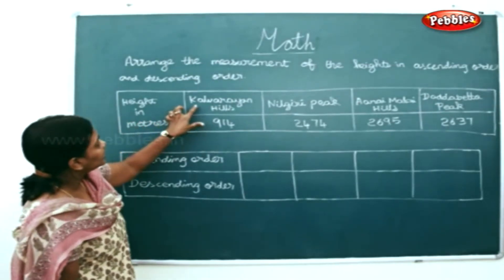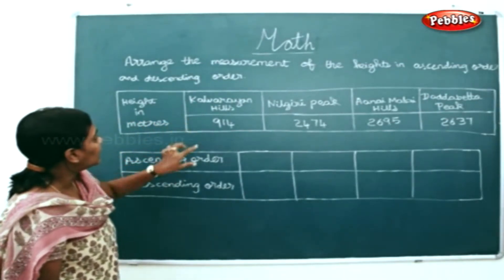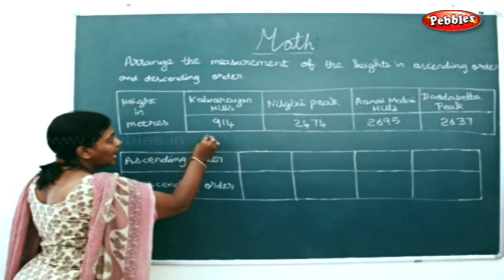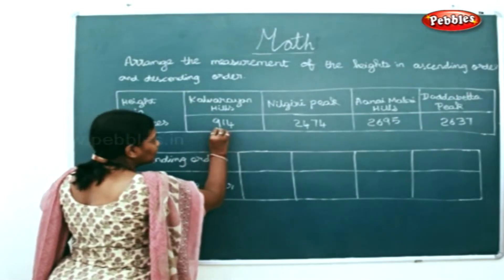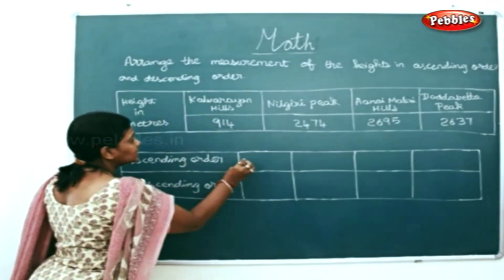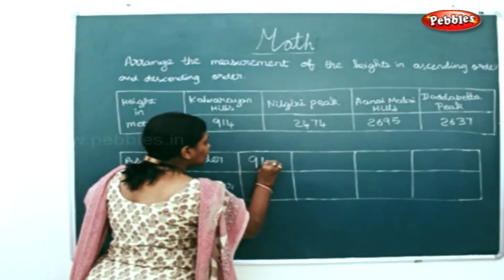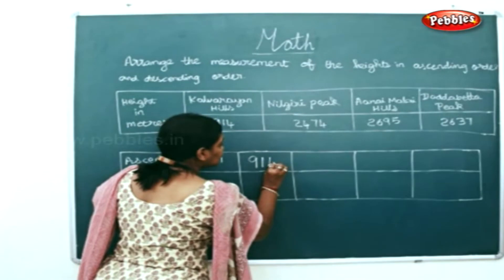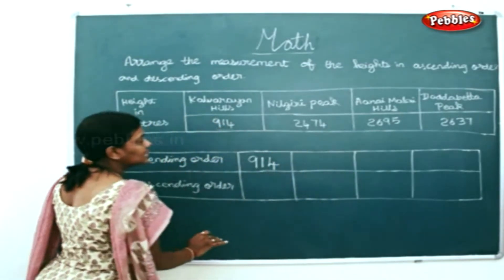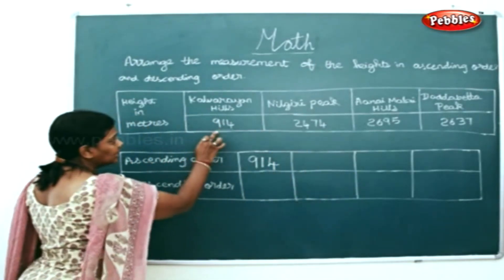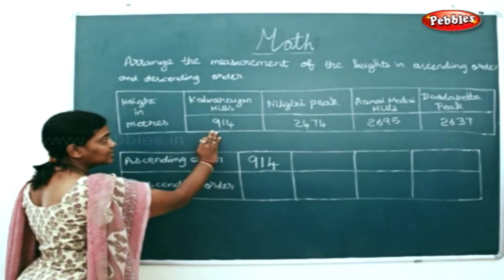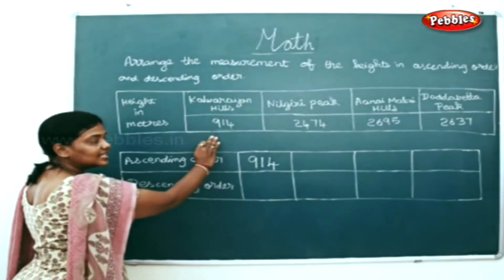Now, Kalavarayan Hills is 914 kilometers. As you know, this has only 3 digits, so it is the smallest in these given numbers. 914 is the smallest since it has only 3 digits.